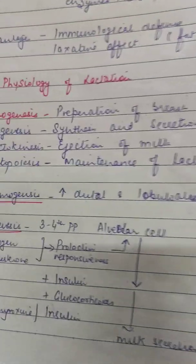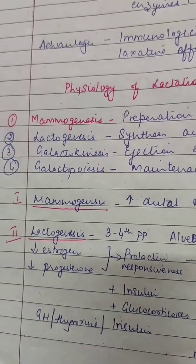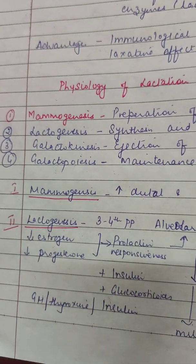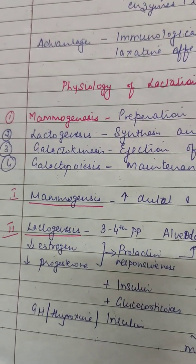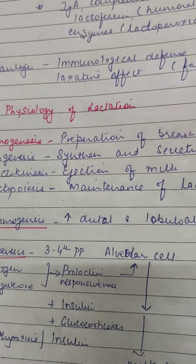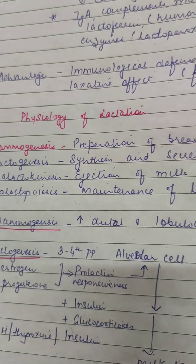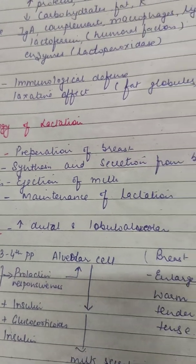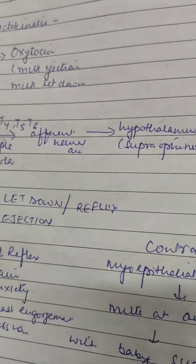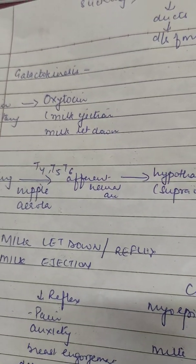The third is the stage of galactokinesis. After mammogenesis and lactogenesis — breast preparation and milk production — now the milk has to be ejected. So the third stage is galactokinesis, which is the ejection of milk. The hormone here is oxytocin, which is also called the milk ejection or milk let-down hormone, and it is released from the posterior pituitary.